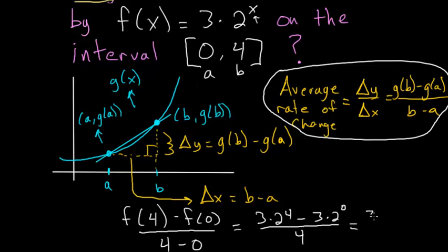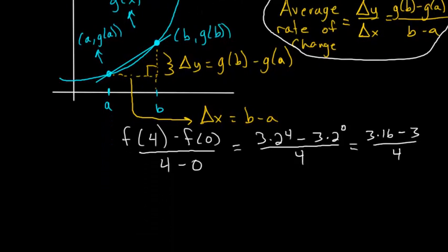And 2 to the 4 is 16, and 2 to the 0 is 1. So it's 3 times 16 minus 3, all divided by 4. And 3 times 16 is 48, minus 3 divided by 4.